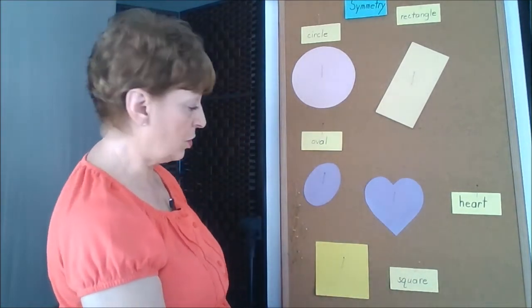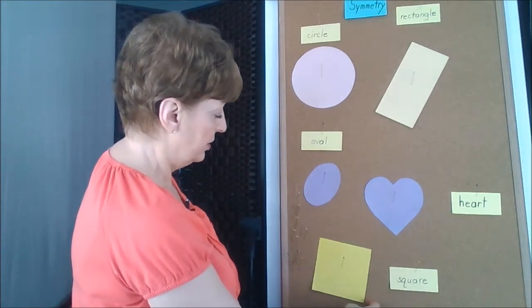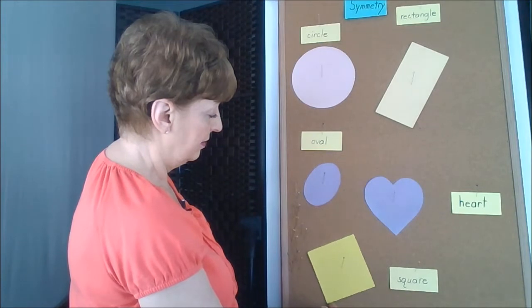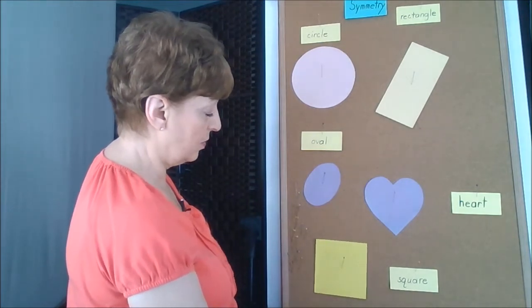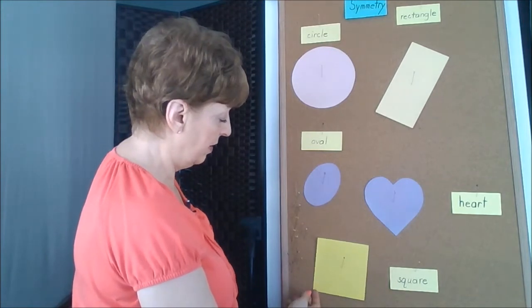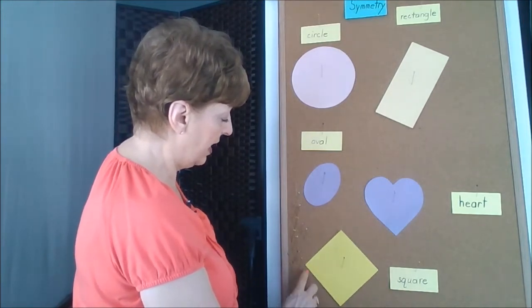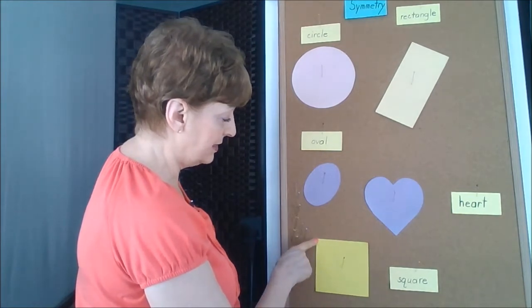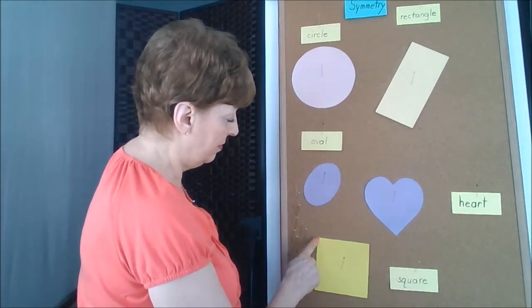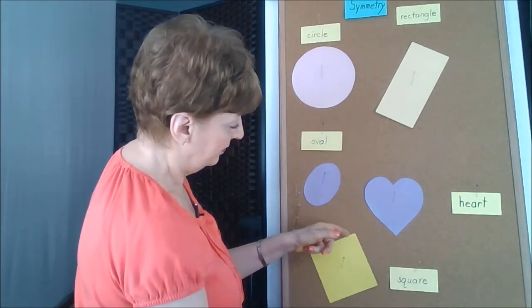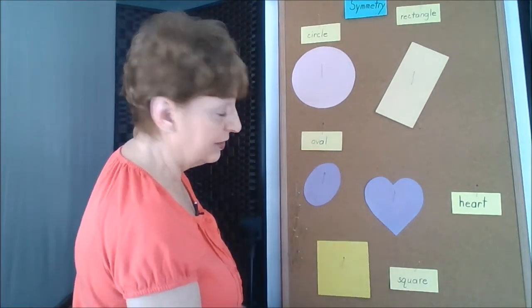Let's see what happens to our square. If we turn it one turn, it looks like a square. Here's the corner that I'm moving, where my finger is. So if I move that corner up to the top, oh, it still looks like a square. How about if I move it again? Yep, still looks like a square.